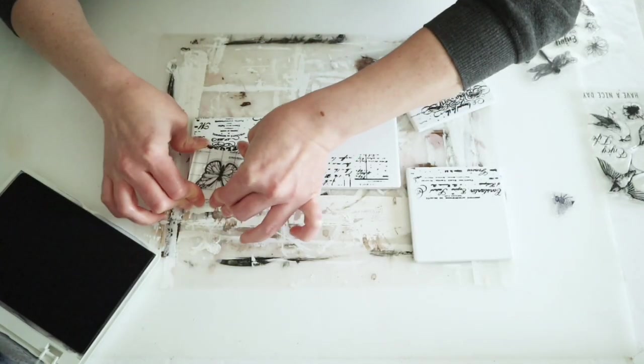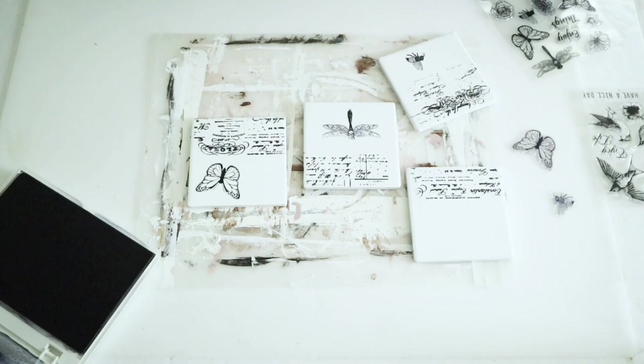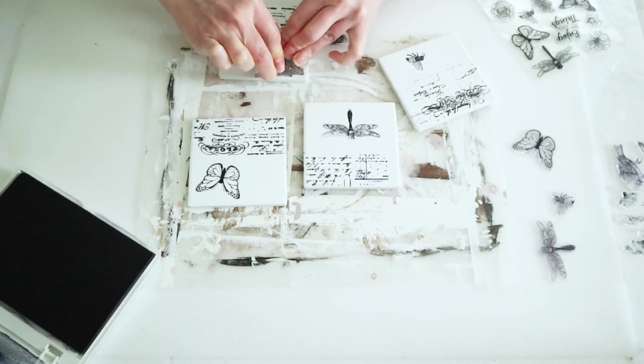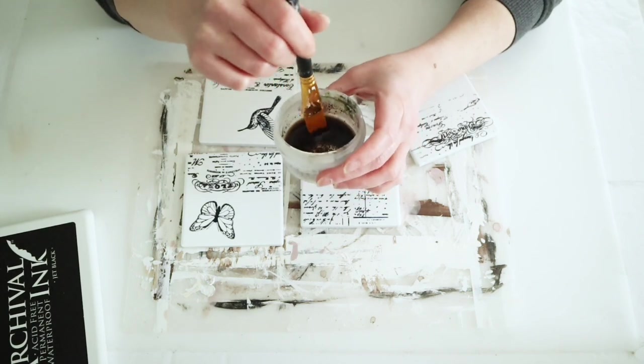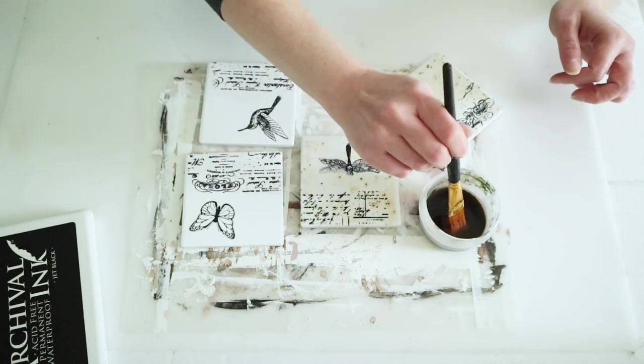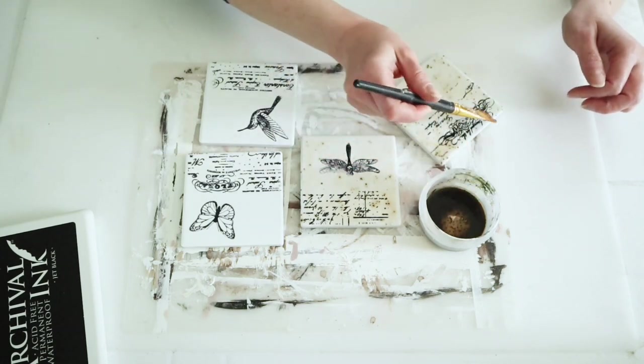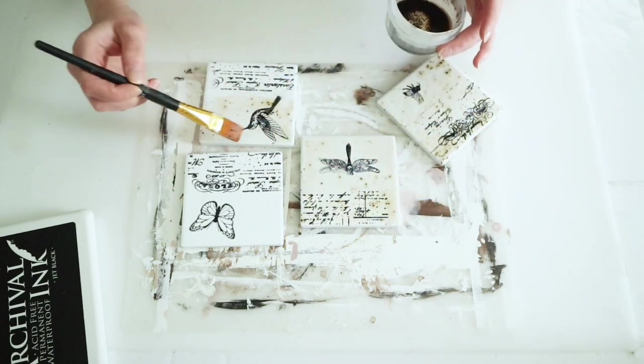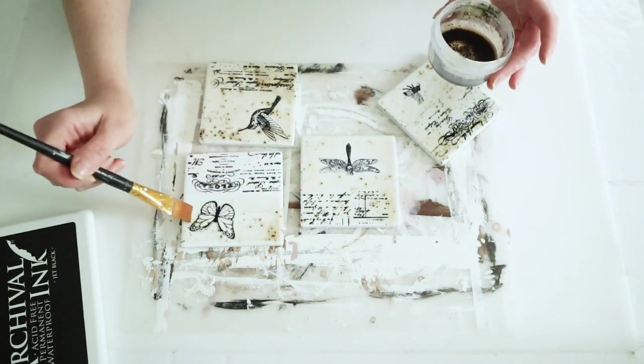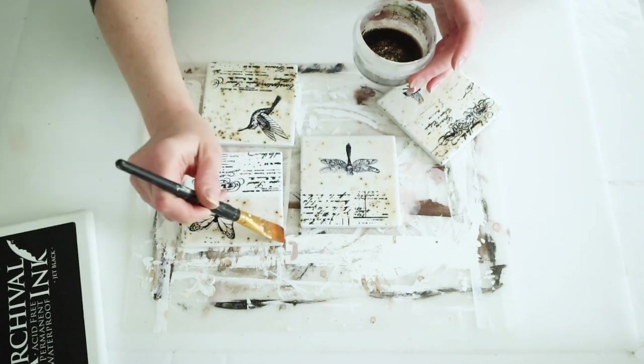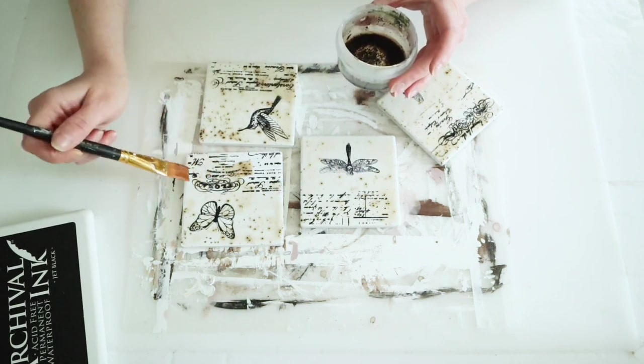Then I grabbed my Dollar Tree stamps and picked a few different ones to fill in those blanks—I did a bee, a hummingbird, a butterfly, and a dragonfly. To make these look even more vintage, I grabbed some used coffee grinds, added a little water, and I'm going to coffee stain all of these coasters.